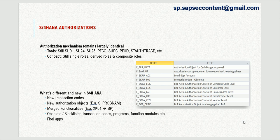When transactions are blacklisted, they are either replaced with new transaction codes, made obsolete, or their functionality is made available via Fiori apps. With every S4HANA release, SAP also releases a document called the simplification list document, which provides details of the changes that particular release brings in. Along with transaction code changes, new authorizations are also introduced in S4HANA.